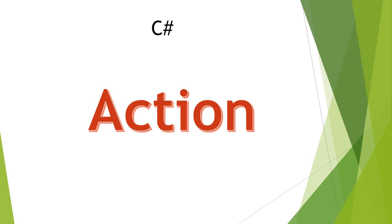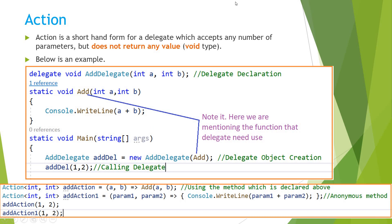Hello all, welcome to my YouTube channel. In this video let us discuss about Action in C#. Action is a shorthand form for a delegate which accepts any number of parameters but does not return any value, so that means it's a void type.